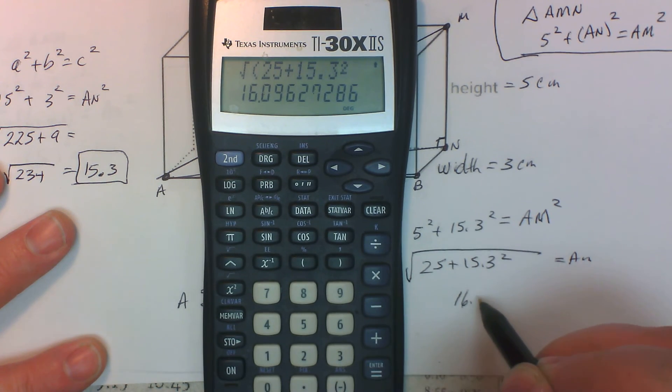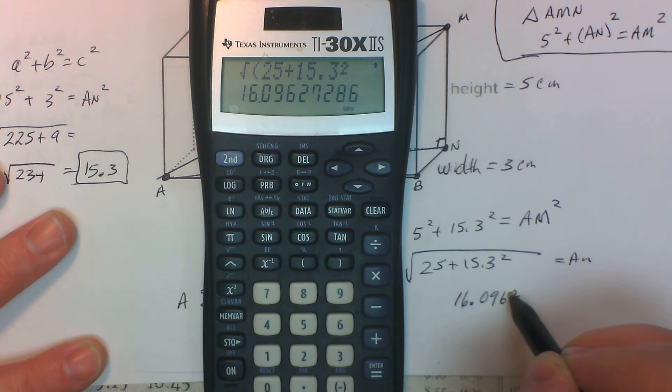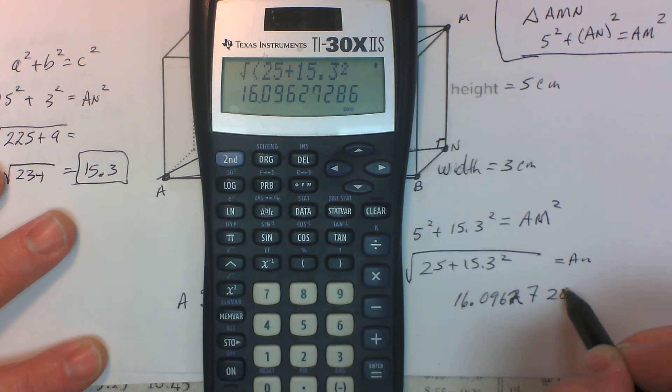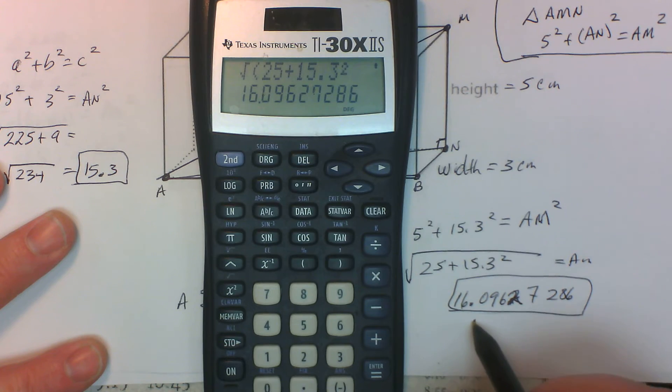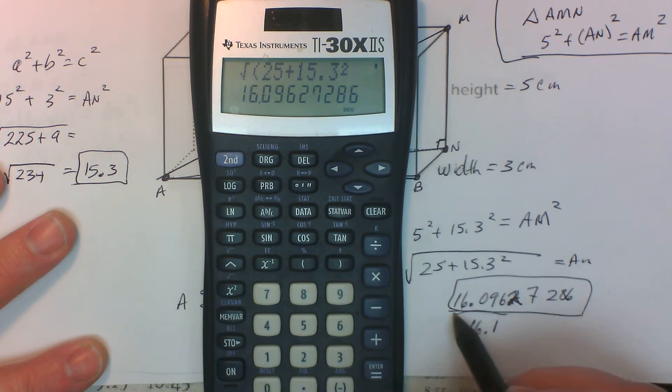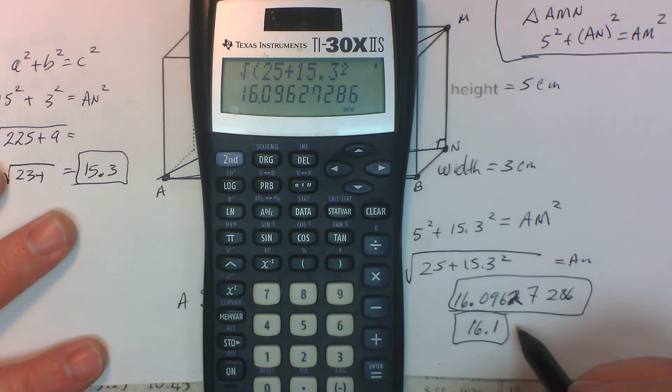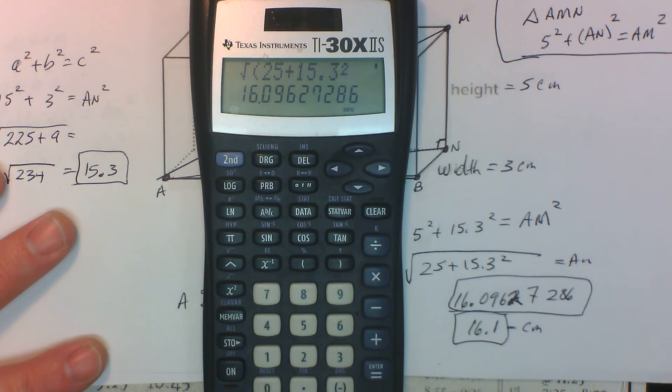16.096627286. Now if you're taking an IB test, sometimes they give you credit if you round incorrectly, if you write that down. But let's go ahead and write it down to 3 significant figures anyway. So the distance is 16.1 centimeters.